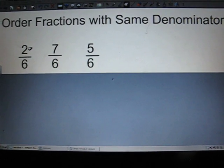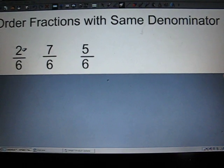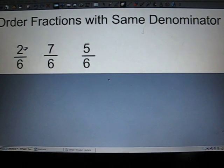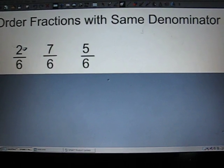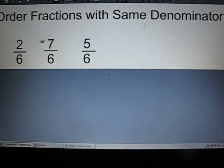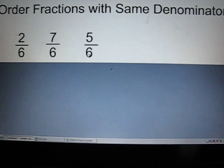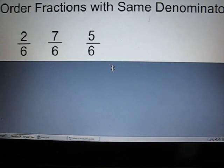We remember that the numerator tells us how many pieces are shaded in, right? So obviously, if I have 2 pieces shaded in here, and 7 pieces shaded in here, and 5 pieces shaded in here, I hopefully can figure out which one has more shaded in.